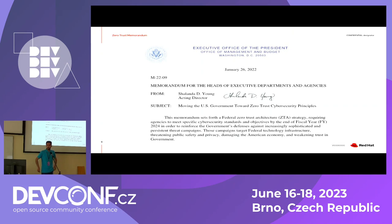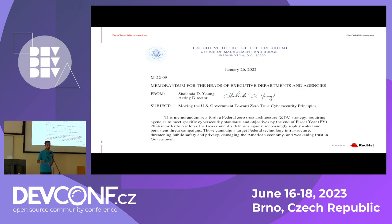Now let's speak about the reality. In January 2022, the US government released a memorandum moving the US government toward zero trust cybersecurity principles. The idea is to move towards a more secure environment, with implementations finished by the end of 2024. The guiding principle of this zero trust model is that no actor, system, network, or service — whether inside or outside the security perimeter — is trusted. All communications must be encrypted and authenticated as soon as practicable, so users can access applications from anywhere.